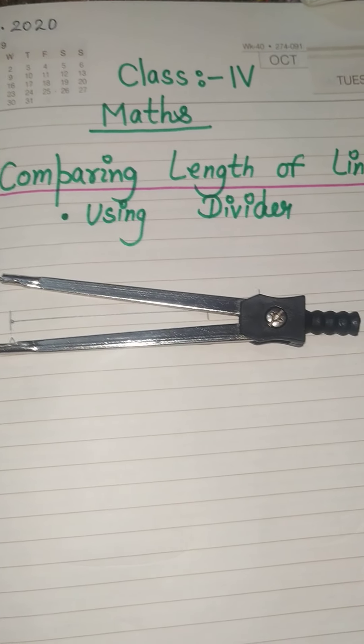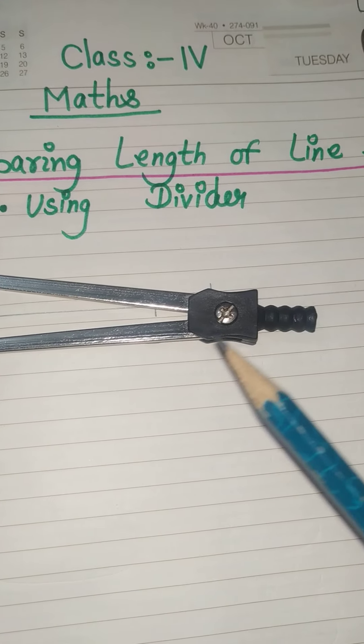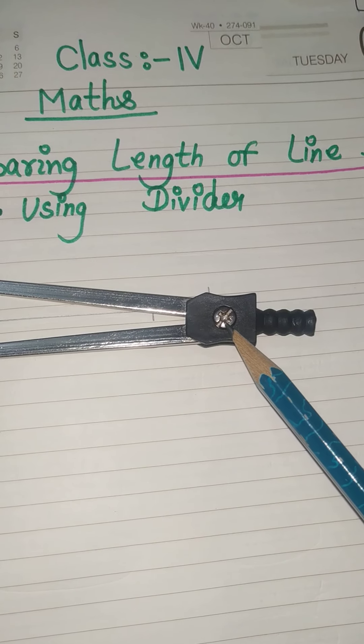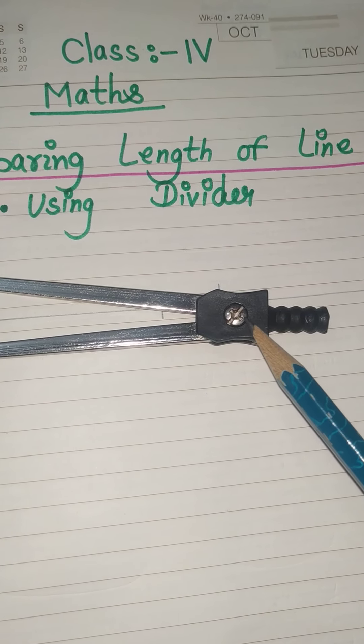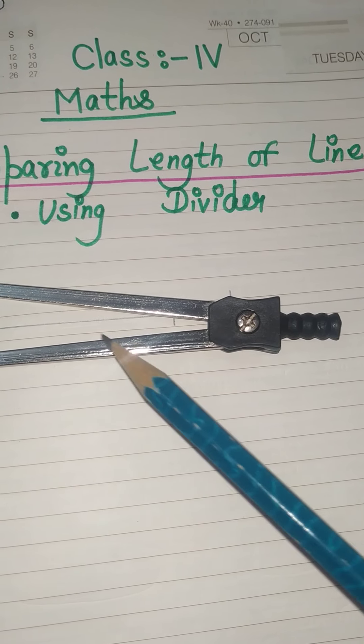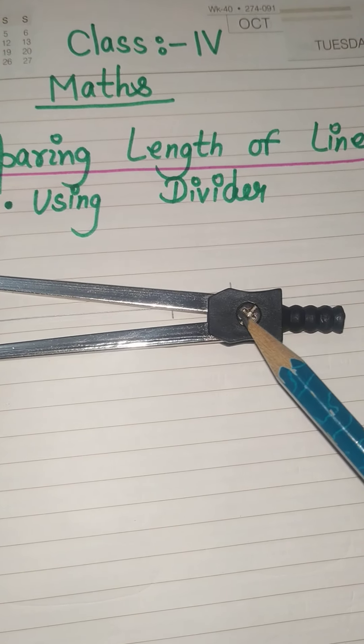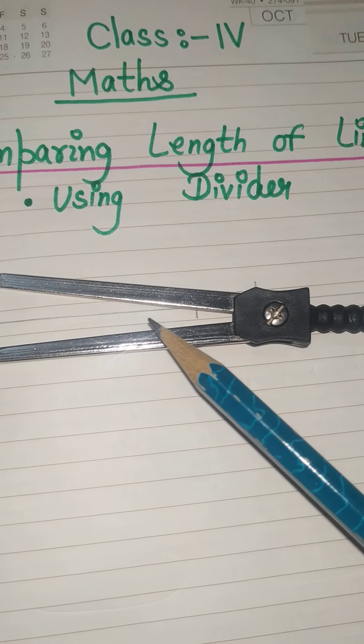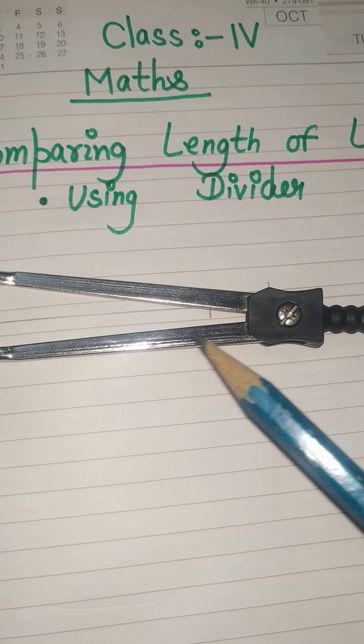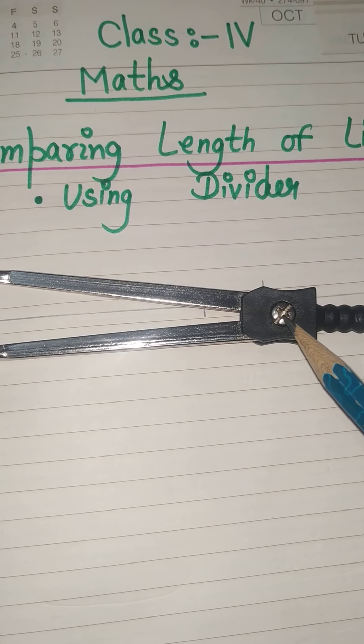So this is known as a divider. This divider here has an adjustment screw, so with the help of this screw you can adjust the length of this divider. This screw helps you to loosen or tighten it.